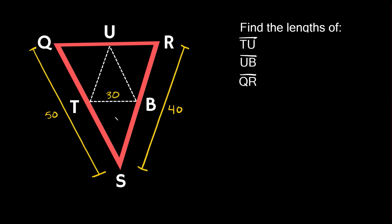A mid-segment is just a line or segment that connects the midpoints of two sides of a triangle. So if I tell you that this point T, this point U, and this point B are midpoints, well then you can see we can draw some lines that connect those points.